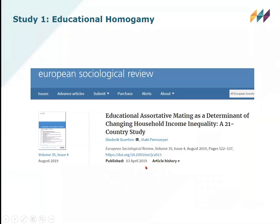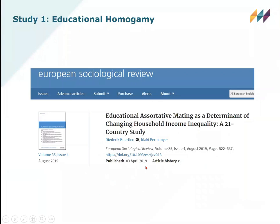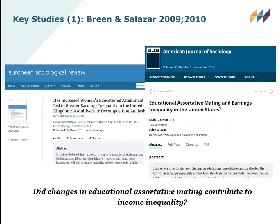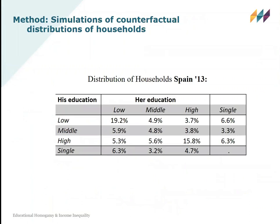Let's start with education — how similar are partners in terms of their education. I'll be discussing briefly the results from an article which came out recently where I compare 21 countries and ask: do changes in educational assortative mating or homogamy — I use them as synonyms — contribute to income inequality between households? This article is based on the work of British sociologist Richard Green and Spanish colleague Lire Salazar, and there is one article specifically on the UK, but we expand this analysis in various directions.